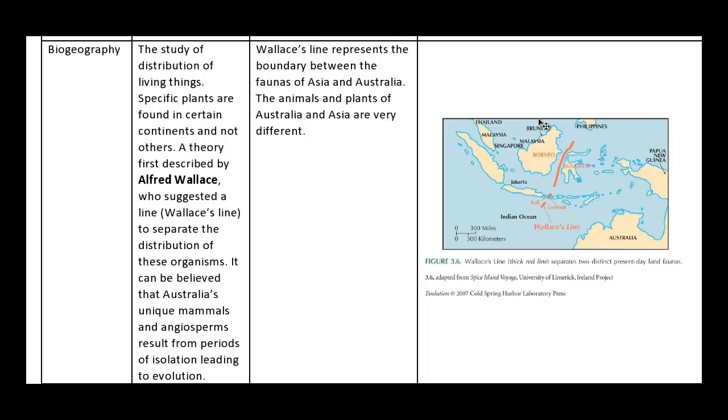His theory was that everything after this line defined many different organisms, fauna and flora, mainly faunas, inside Australia compared to Asia. So as I've said in this example, Wallace's line represents the boundary between the faunas of Asia and Australia. The animals and plants of Australia and Asia are very different.